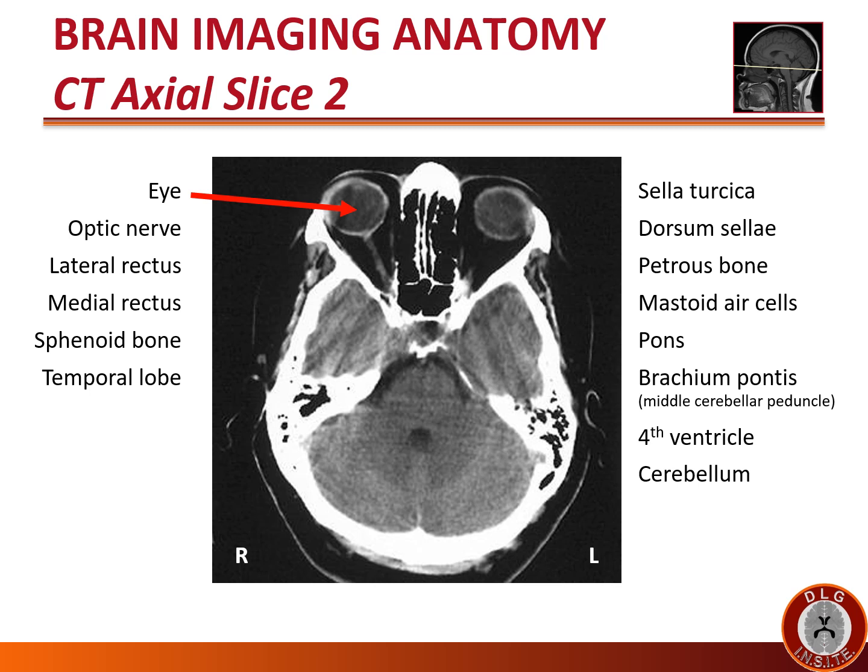The eyes are once again easy to identify. Note the image is slightly asymmetric — the lens is still partially seen in the right eye and not seen at all in the left eye, as we are above the level of the lens on that side. The optic nerve is the structure entering the eye posteriorly. Note that we only see the right optic nerve, not the left, because of the asymmetric way the slices were obtained.